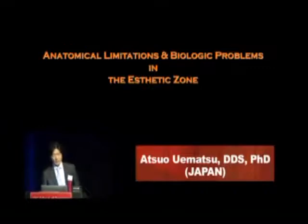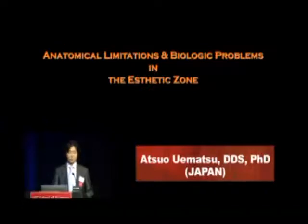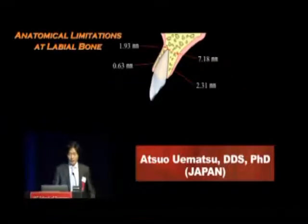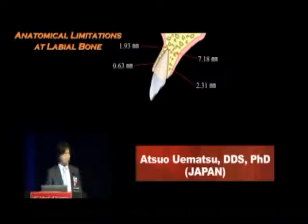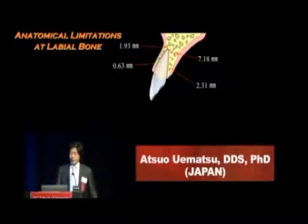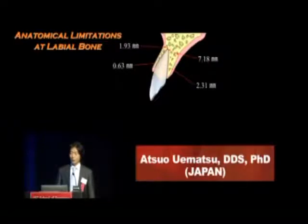First of all, I will address the anatomical limitations and biologic problems in the aesthetic zone. In this diagram, you can see the facial bone thickness is only about 0.63 millimeters, which is the average for a Japanese person. Therefore, alveolar resorption normally occurs following a tooth extraction.